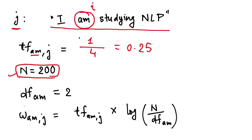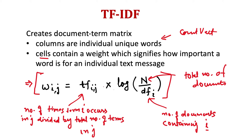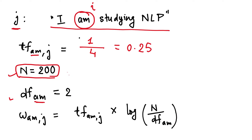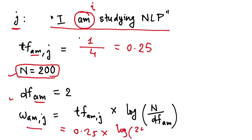df of 'am' is 2, meaning out of those 200 documents it's present in only 2 sentences — so it's quite a rare word for this corpus. Now let's calculate w_amj, which is the value of the cell in the document term matrix: 0.25 multiplied by log(200/2) = log(100) = 2. So the result is 0.25 * 2 = 0.5.